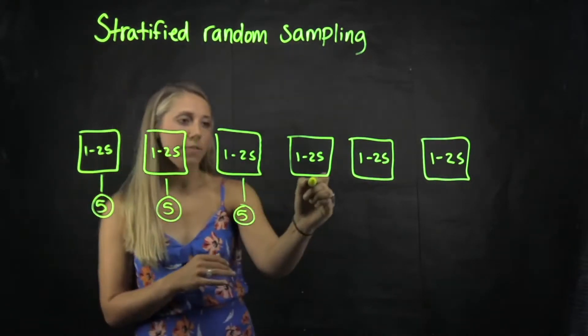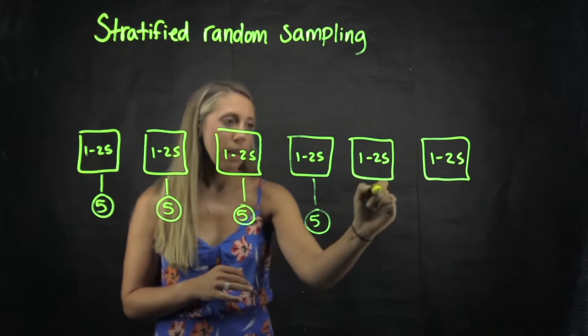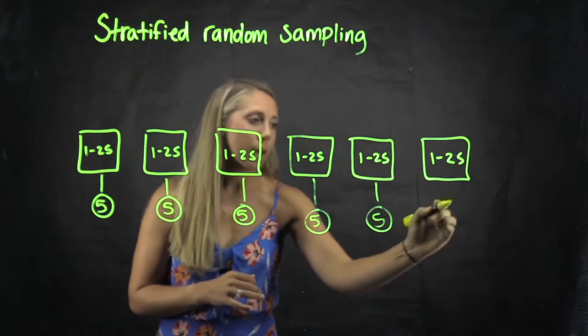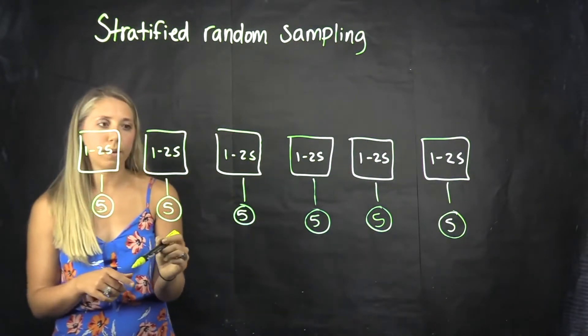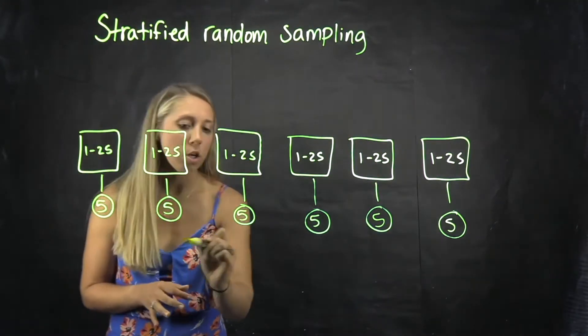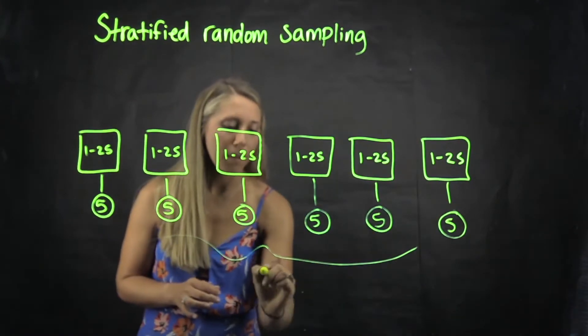So the strata here are the different classrooms and the reason why we're taking 5 from each classroom is because then it would make up a total sample of 30.